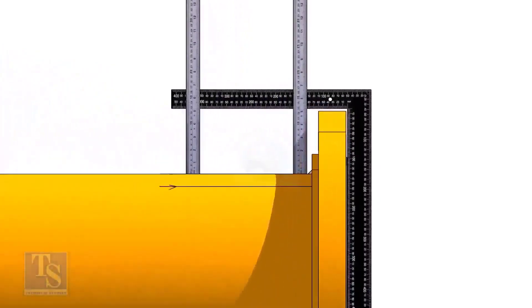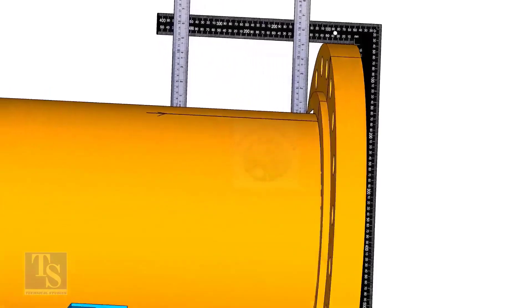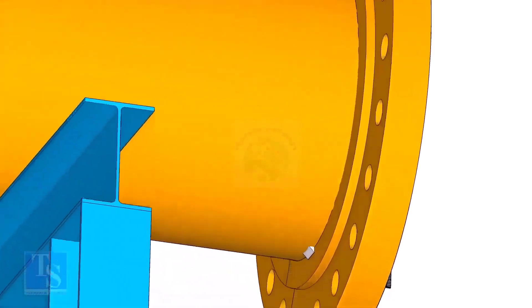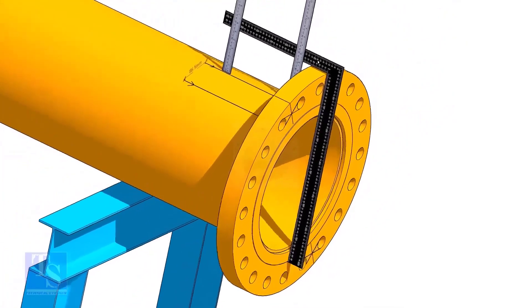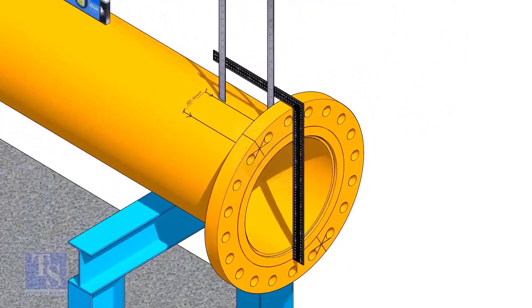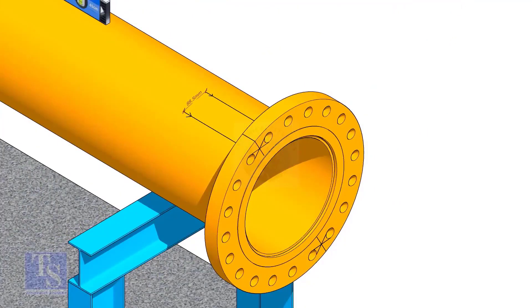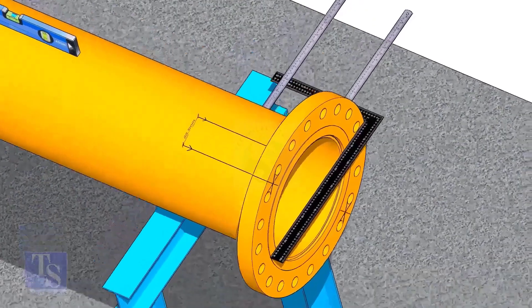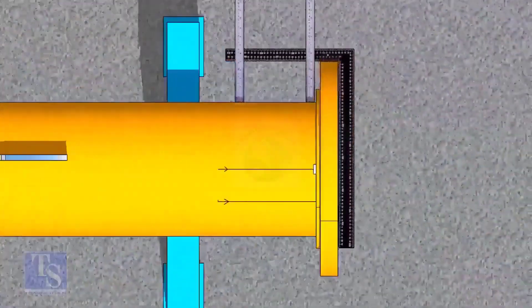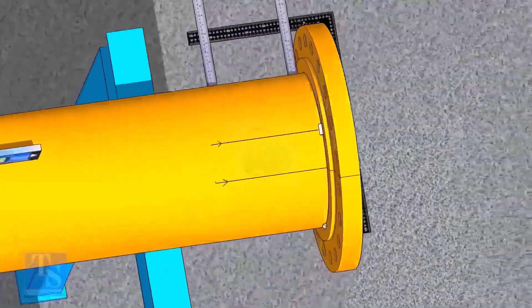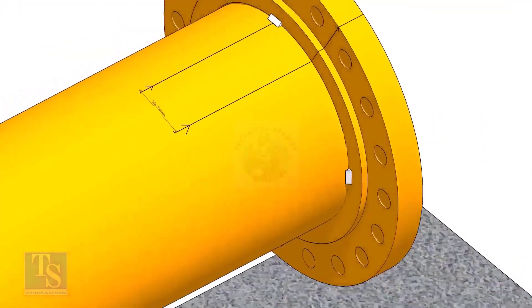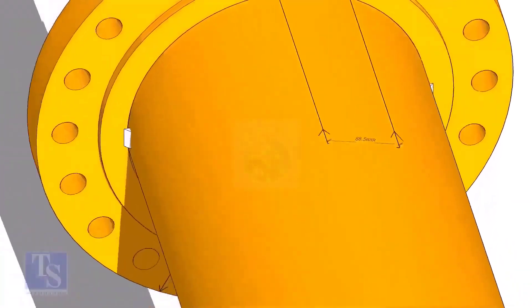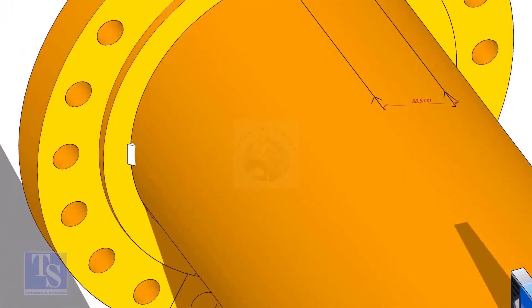Tack weld on the top of the pipe with the flange and check the squareness. If correct, tack weld at the bottom side also. Now, maintain the squareness of the opposite side, and tack weld on both sides. Use the squareness of the other side.